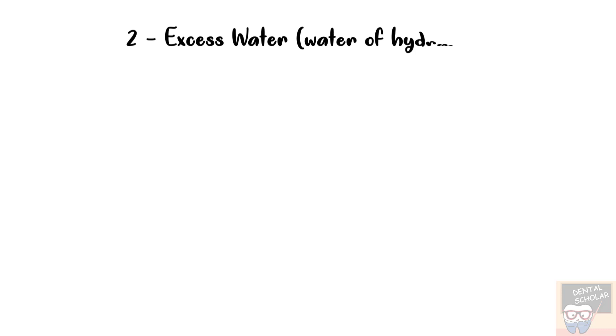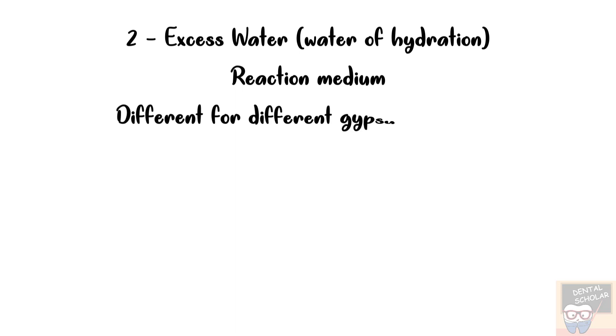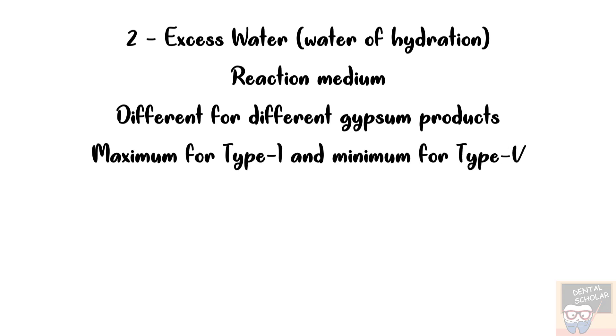The second component is called excess water and it provides reaction medium. So for different gypsum products, the amount of excess water would change. It is maximum for type 1 and it would reduce till it is minimum for type 5. And here the answer would be option D, that is die stone with high strength.